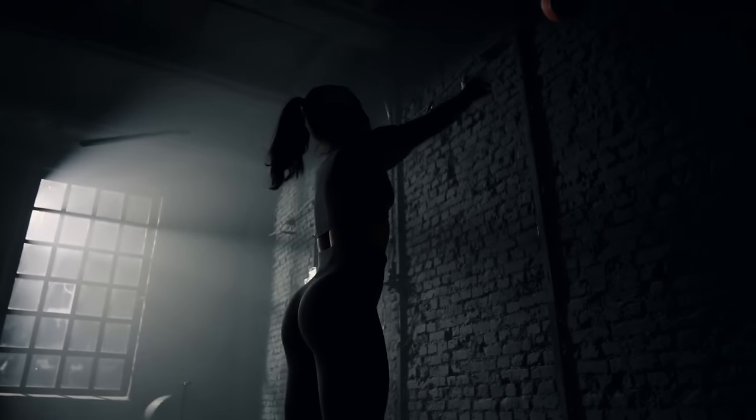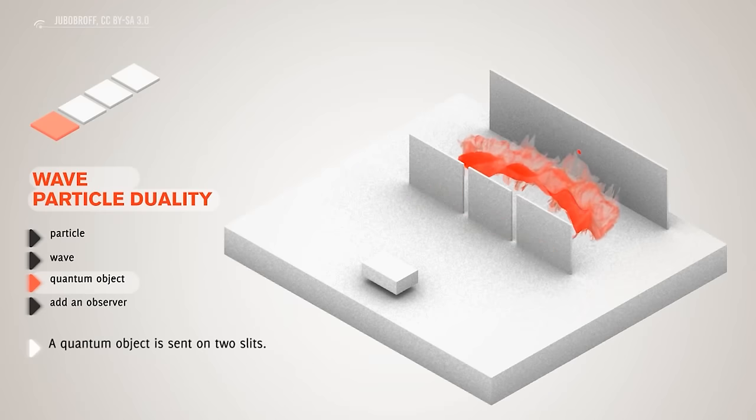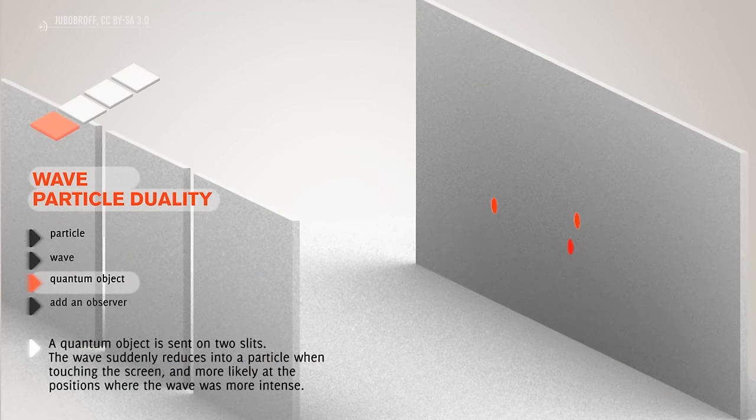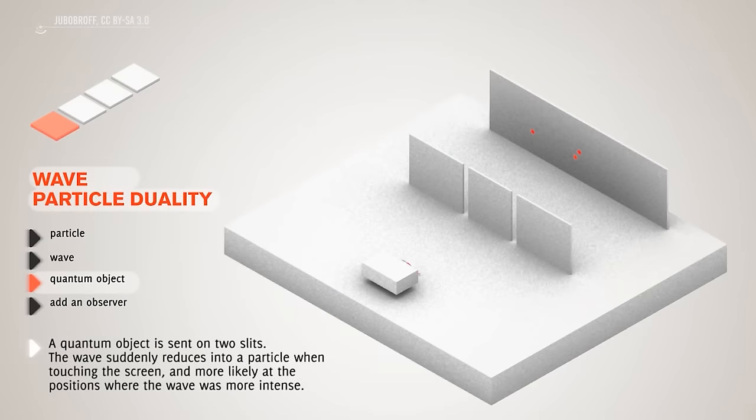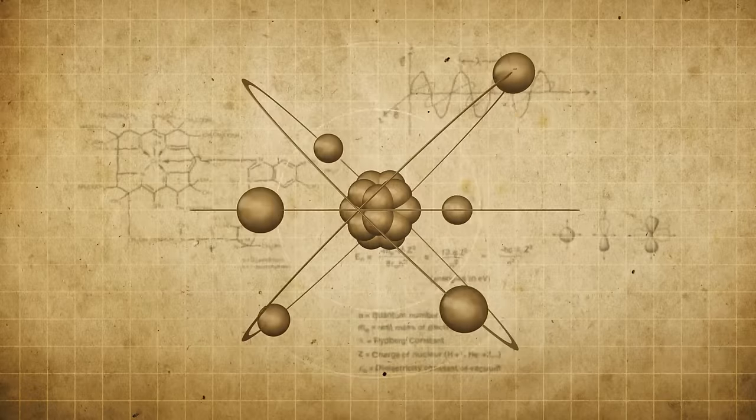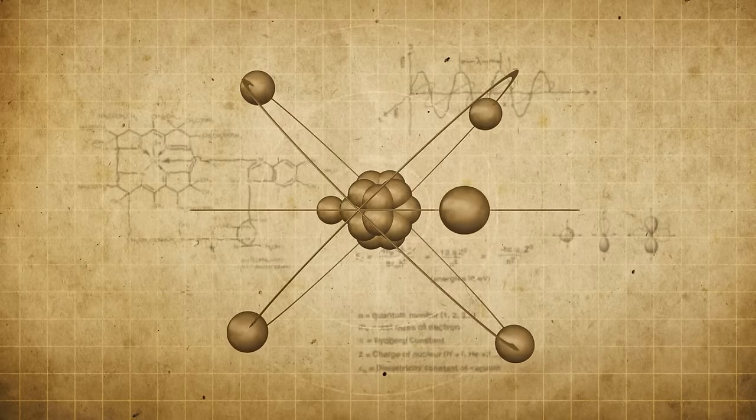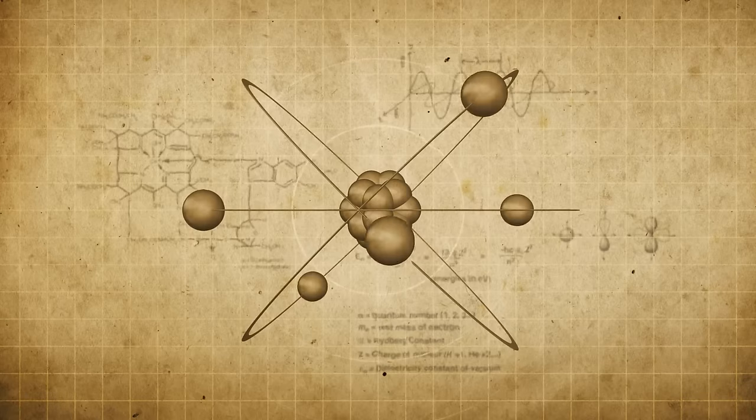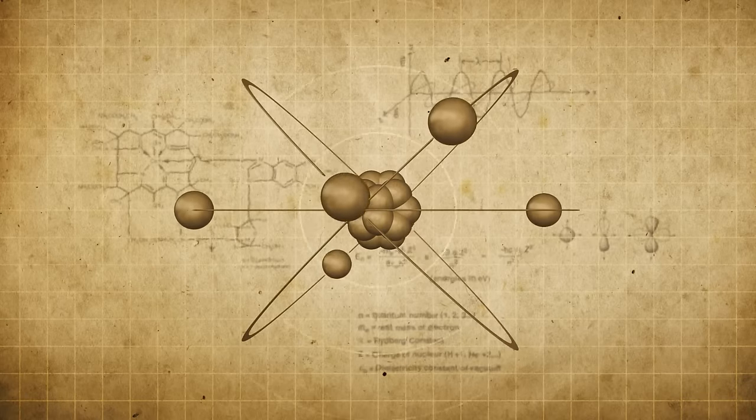Instead, nature doesn't work like that. The probability of an event, for example, where on the screen a particle shows up in the double-slit experiment, is related to the square of the absolute value of the amplitude of its wave function. We can just say, for example, that we have an 80% chance that we'll find the particle in a given position interval, but we will know where it is only when we will measure it.